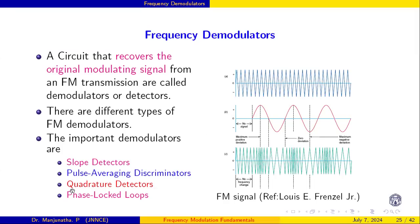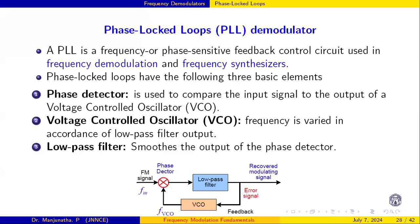In this video I am going to explain how a phase-locked loop works as a frequency demodulator. A frequency demodulator is a circuit that recovers the original message signal. For example, from the FM modulated signal, we have to recover back the message signal. The message signal is a sinusoid, and based on its amplitude variation, the carrier frequency is varied. This FM signal is given to the PLL, and from the PLL we have to recover back the original message signal.